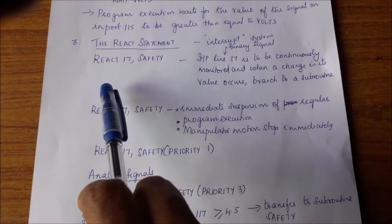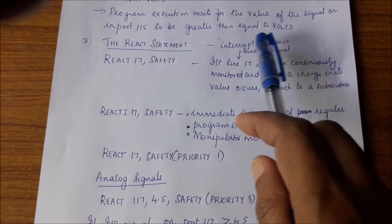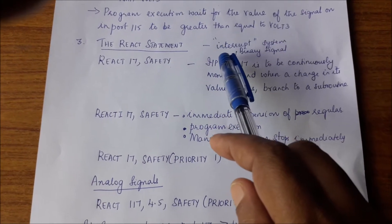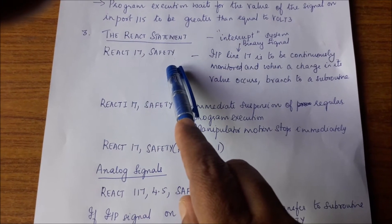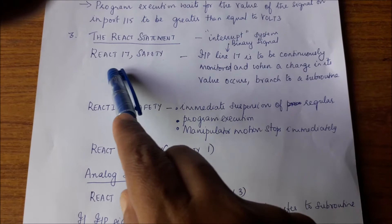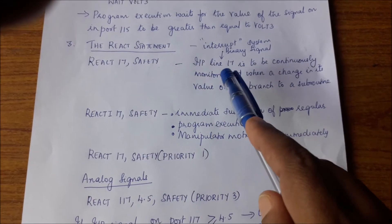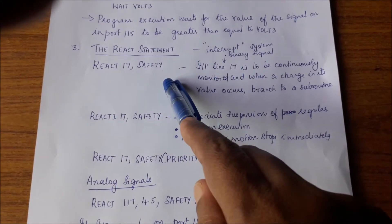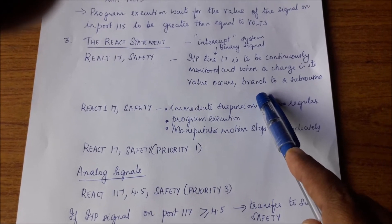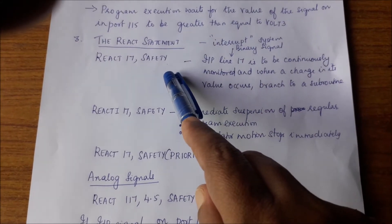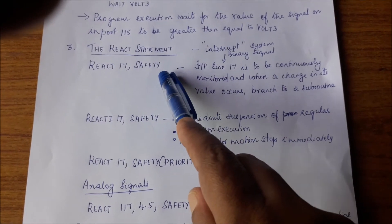Now there is another set of statements in the same category: the react statements. This gives an interrupt-kind of capability to robot programming — it is able to interrupt the execution of the regular program. An example is react 17 comma safety. When you see a statement like this, it means a binary signal is going to come to input port 17. Input line 17 is continuously monitored, and when any change in its value occurs — high to low or low to high — the program branches from the regular program to a subroutine called safety.